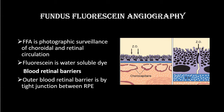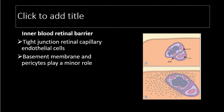There are two types of blood-retinal barriers. The outer blood-retinal barrier is provided by the tight junctions between the retinal pigment epithelial cells by zonula occludentis. The inner blood-retinal barrier is provided by the tight junctions between the capillary endothelial cells. The basement membrane and the pericytes play a minor role in providing the inner blood-retinal barrier.